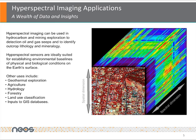There are countless uses for hyperspectral imaging. Some of these include hydrocarbon and mining exploration, environmental baselines, geothermal exploration, agriculture, forestry, and land use classification.